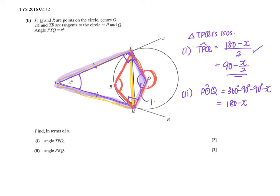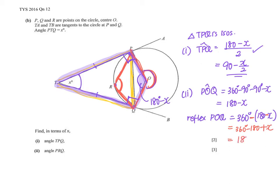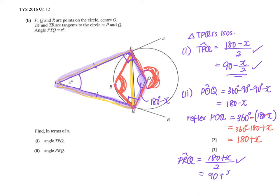If angle POQ is 180 minus X, I need the reflex angle POQ, which is 360 minus (180 minus X). Expanding, that gives 360 minus 180 plus X, which is 180 plus X. Taking angle at center to be twice angle at circumference, angle PRQ = (180 plus X) divided by 2, which simplifies to 90 plus X over 2 degrees.